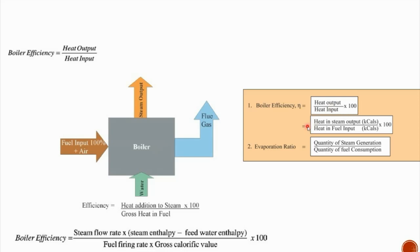In simpler terms, boiler efficiency equals heat in steam output over heat in fuel input. This measures how much steam is produced times its energy over how much fuel is used times its energy. In English units this is in kilocalories, and in SI units it is in kilojoules.